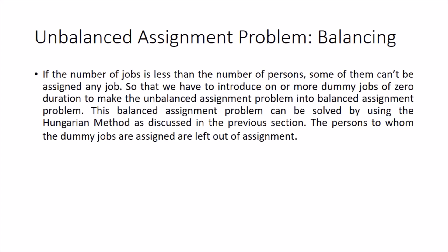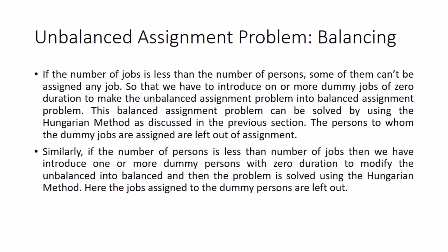There are two possibilities. First, if the number of jobs is less than the number of persons, some persons are extra and won't be assigned any job, so we create artificial dummy jobs to balance the problem. These artificial jobs have zero duration or zero cost because they are virtual. Similarly, if the number of persons is less than number of jobs, we create dummy persons with zero duration to balance the problem.